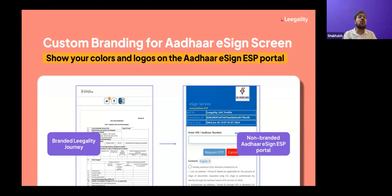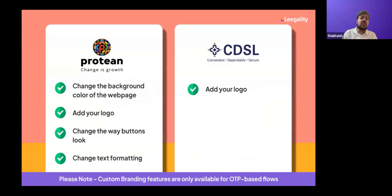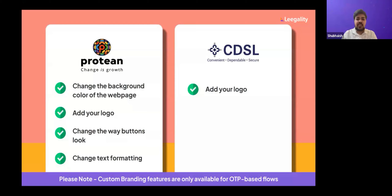Custom branding for the Aadhaar eSign screen allows you to show your brand logo and colors on the ESP page. Currently, two ESPs support custom branding: Protean (formerly NSDL), where you can change the background color, button style, text format, and add your logo; and CDSL, which currently only allows a logo change. Note that these features are only available for OTP-based Aadhaar flows, not biometric, iris, or face flows.